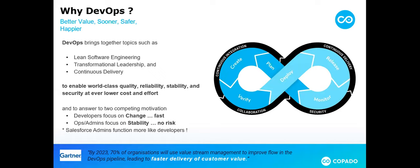DevOps is a term that combines 'Dev,' which stands for development — those who create new functionality — and 'Ops,' which stands for IT Operations — those who run that software in production. The term implies collaboration between these teams, motivated by the common goal to enhance both innovation and stability. A lot of companies started looking for tools to improve their deployment, and DevOps is there to help.